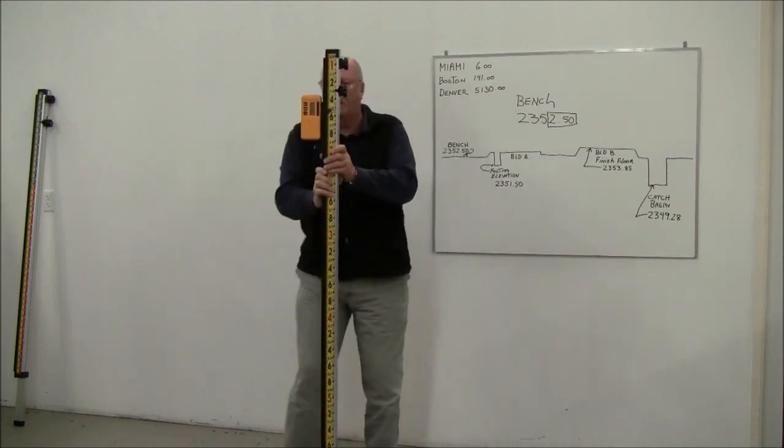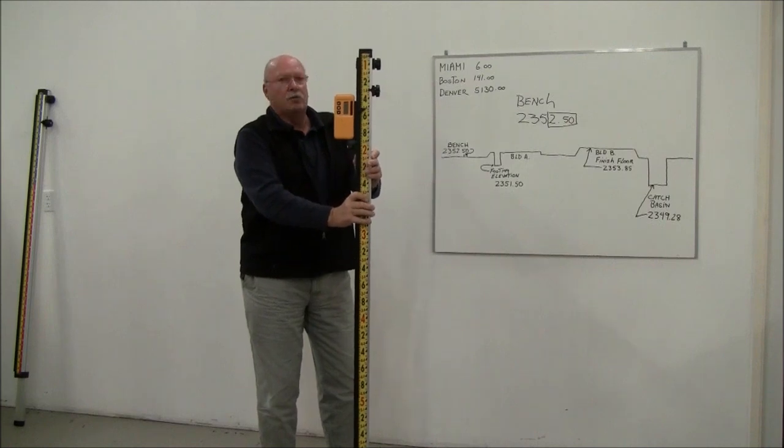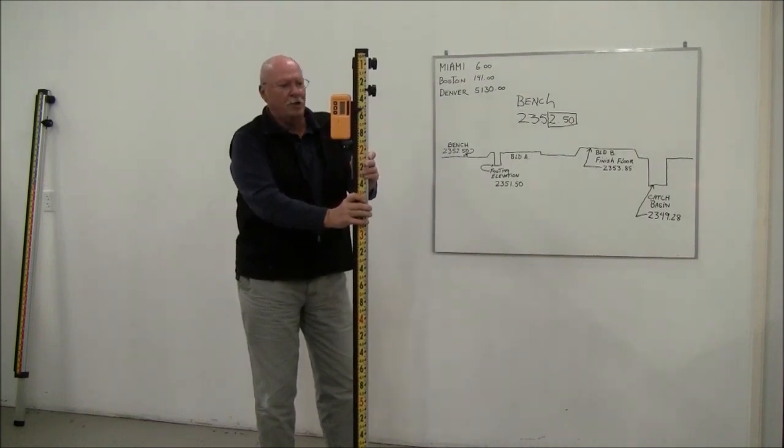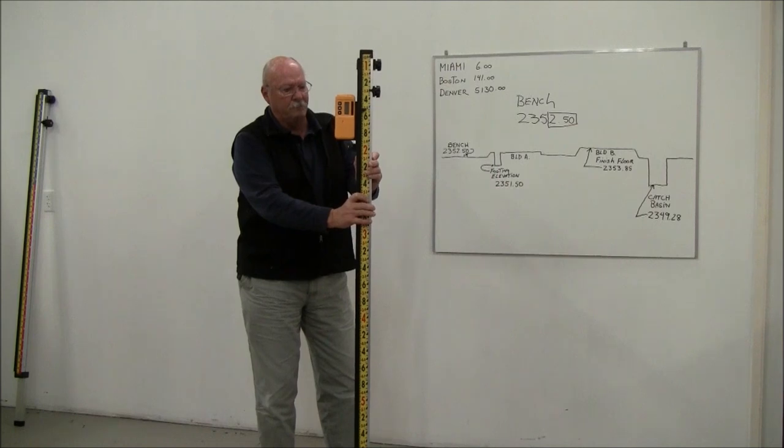So that is, that's a direct reading rod. That's a direct reading slash true elevation linker rod. And that's how you use it. Thank you.